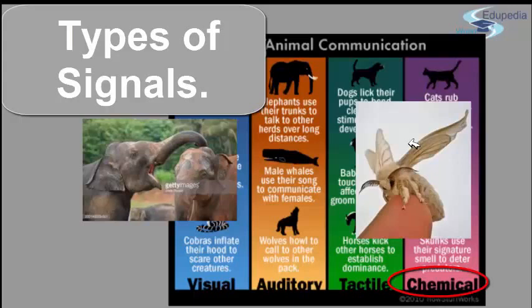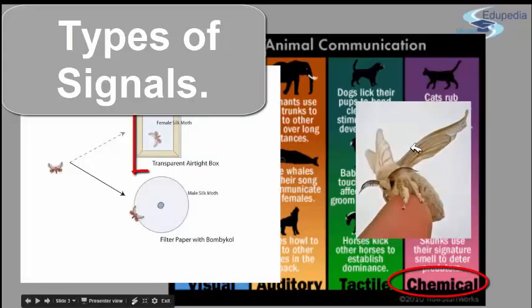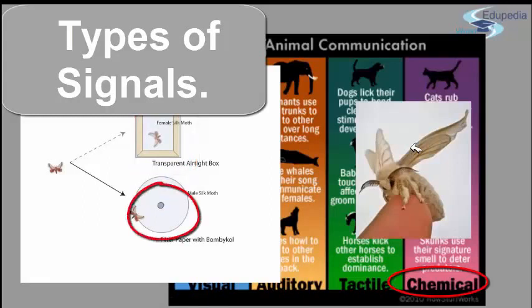Researchers attempted to tease apart the role of visual and chemical signals in silk moth. What they did is they gave males the choice between a female in a transparent box and a piece of filter paper soaked in the chemicals produced by a sexually receptive female. Inevitably, males were drawn to the source of chemical signals and did not respond to the sight of the isolated female.